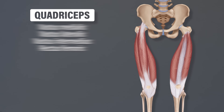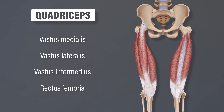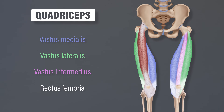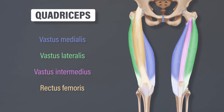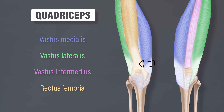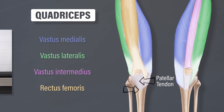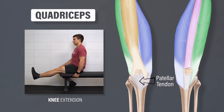The quadriceps consist of four different muscles: the vastus medialis, the vastus lateralis, the vastus intermedius, and the rectus femoris. All four muscles come together to form the quadriceps tendon that attaches to the patella or kneecap. They then insert on the tibial tuberosity via the patellar tendon and act to extend or straighten the knee. Combined, these structures are referred to as the knee extensor mechanism.